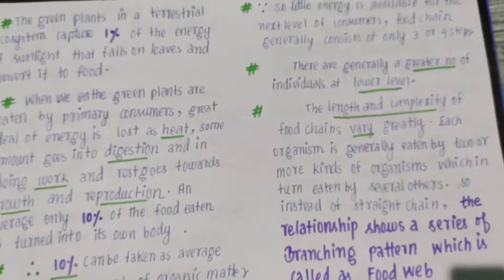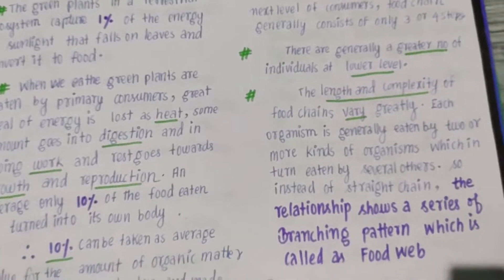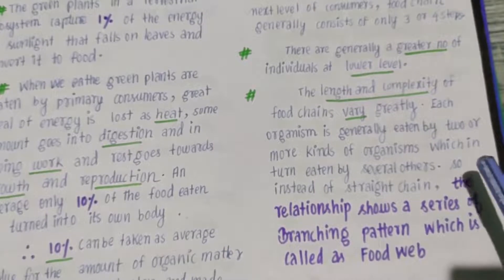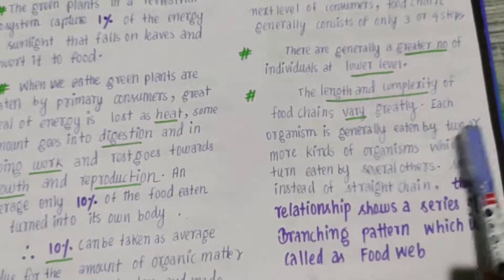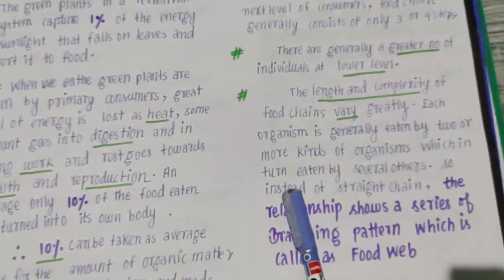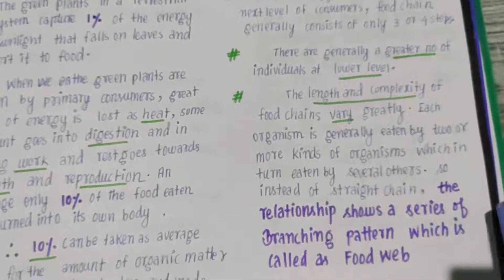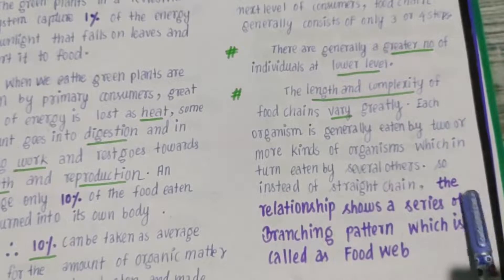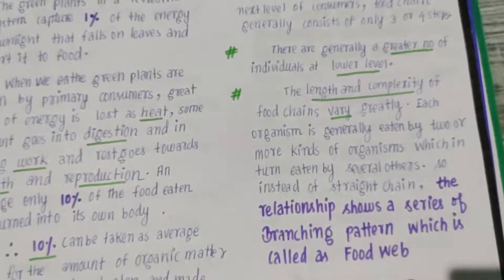If you look at each ecosystem, the food chain will change. What is important is that each organism is generally eaten by two or more kinds of organisms, which in turn are eaten by several others. So instead of a straight chain, the relationship shows a series of branching patterns, which is called a food web.